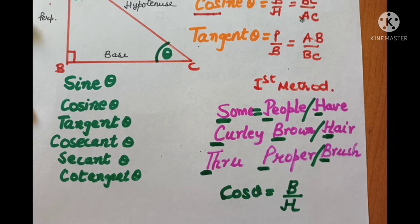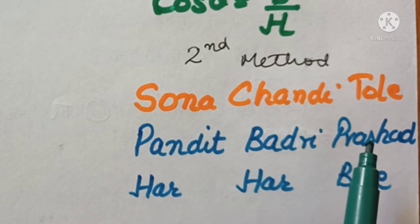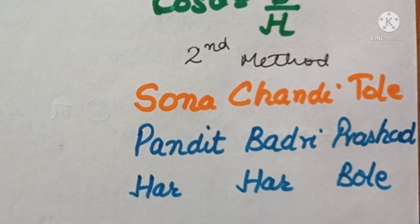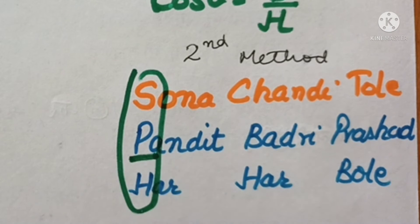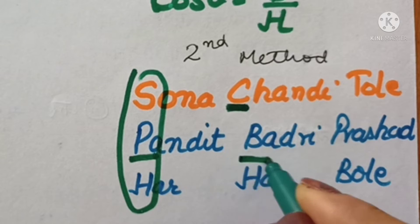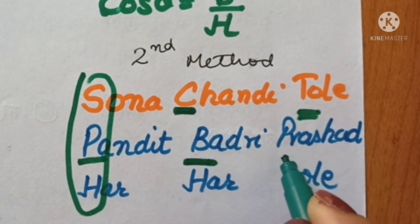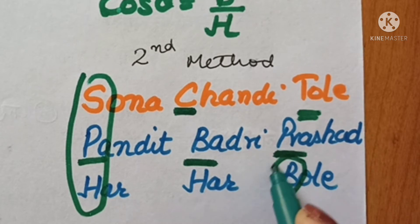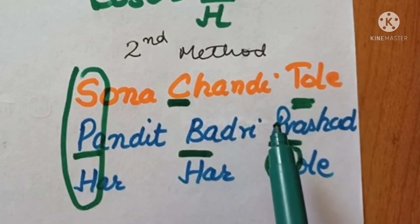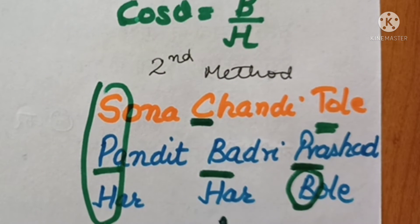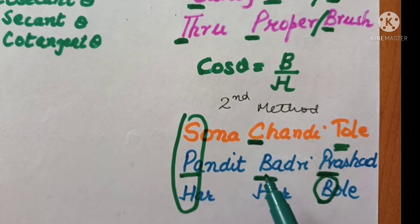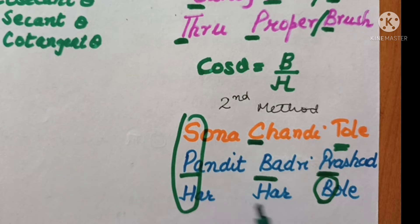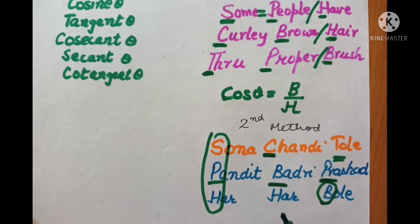Our very own Desi method — it goes like this: 'Sona chandi tole, pandit badri prashad har har bole.' Sine theta is perpendicular upon hypotenuse, cos theta is base upon hypotenuse, and tangent theta is perpendicular upon base. This is also very easy and interesting, but compared to 'some people have', this poem makes a relationship across all three lines to recall one T-ratio. You may prefer whichever you like.